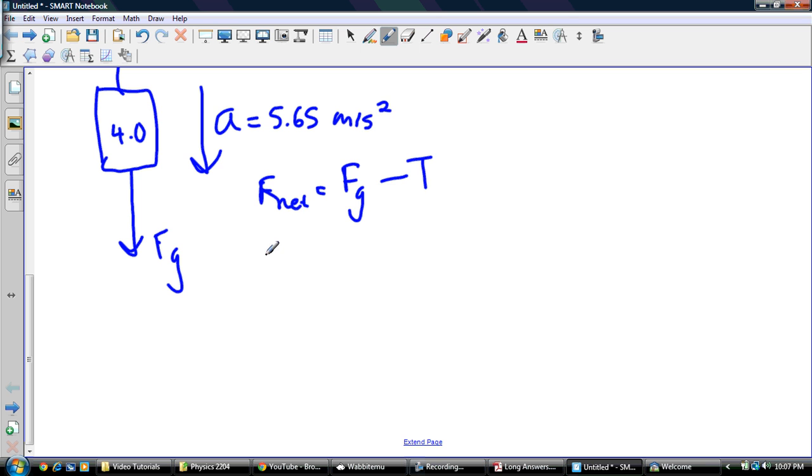Now my F net, we don't know what that is, but we can find it. My F net again is still equal to mass times acceleration. My force of gravity is just mass times gravity, and my tension is T. So my mass times acceleration, so my mass is 4, my acceleration is 5.65. My force of gravity is mass times gravity. So I know there's a tendency sometimes to put in just 9.8, but I want you guys to recognize that you've got to put force of gravity. So this thing's got to be in newtons.